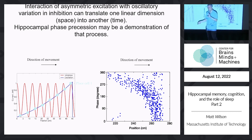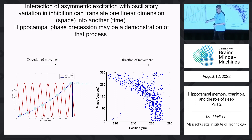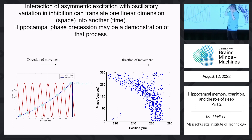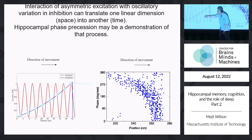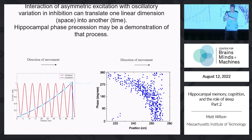Coming back to the critique: the excitatory input also has theta modulation, not just a ramp. If you make the excitatory theta in phase with the inhibitory theta, the model doesn't work. In order for the model to work, you have to shift the excitatory input 90 degrees out of phase with the inhibitory input. That's exactly the phase relationship observed: theta modulation in excitatory spiking output is shifted 90 degrees relative to corresponding inhibition.